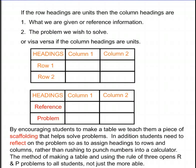If the row headings are units, then the column headings are what we are given, or reference information, and two, the problem we wish to solve, or vice versa if the column headings are units. So here we write out the table, there's headings for the columns, headings for the rows. So we have our reference information here and here, and our problem information here and here.